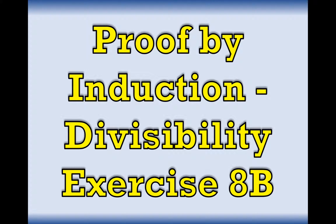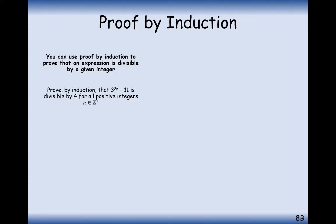Hello there and welcome to this series of videos going through the content of A-level Further Maths. Here we're looking at the divisibility proof by induction section, so we can answer questions from exercise 8b. I'm going to do these types of questions slightly differently to how they're done in the book, but still proving the same thing. Let's get started on the first one: prove by induction that 3 to the power of 2n plus 11 is divisible by 4 for all positive integers n.